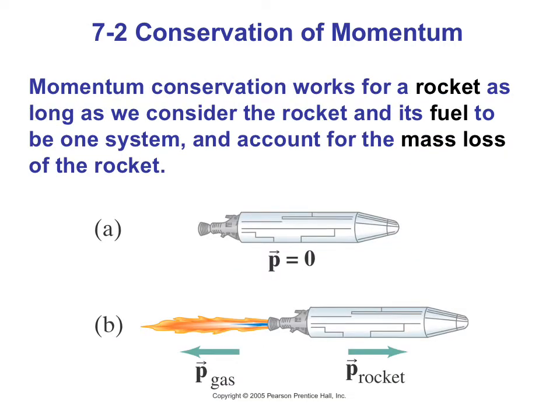This slide is an example of what I call a perfectly anti-inelastic collision. Notice there is one object before, the rocket and its fuel, and two objects after, the fuel going in one direction and the rocket going in another.